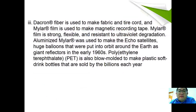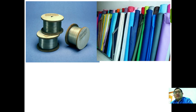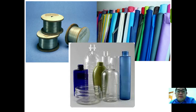Mylar film, also made from PET, is used to make magnetic tape recordings for video. Mylar film is strong, flexible, and resistant to ultraviolet radiation. Aluminized Mylar was used to make the Echo satellite — a huge balloon put into orbit around the Earth as a giant reflector in the 1960s. Polyethylene terephthalate is also blow-molded to make plastic soft drink and water bottles. These are a few applications of polyester. That finishes the first part of the polymer chapter on condensation polymerization.